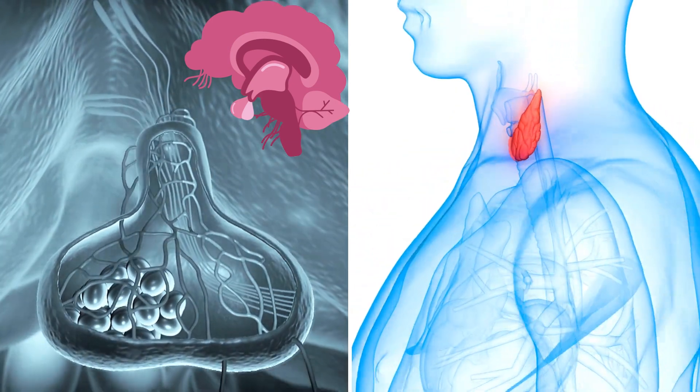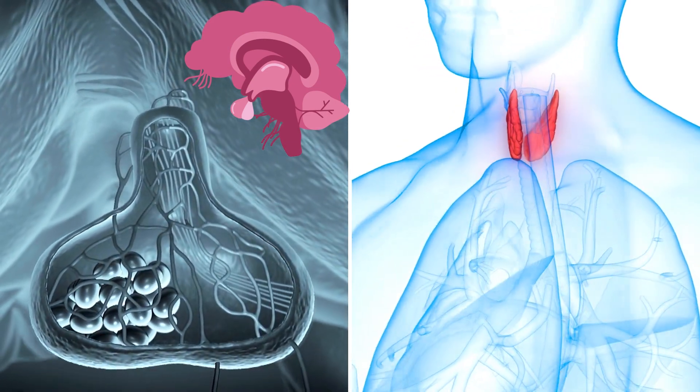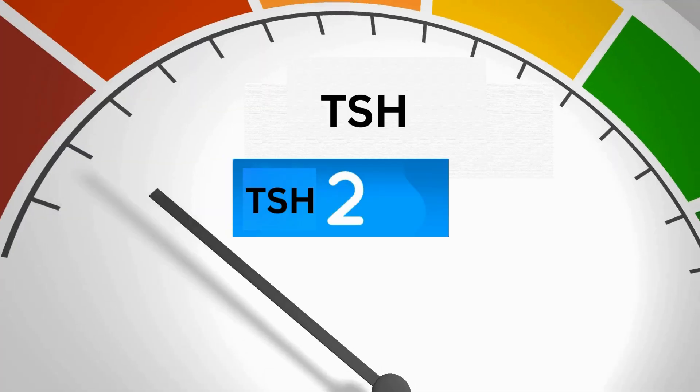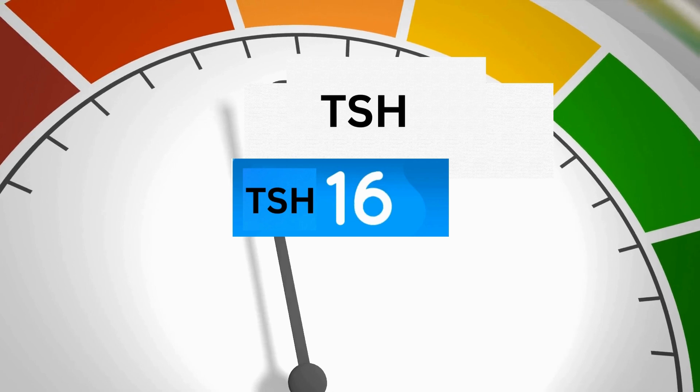As the thyroid gland is underactive in hypothyroidism, it fails to respond adequately to high TSH levels, leading to persistently elevated TSH levels.